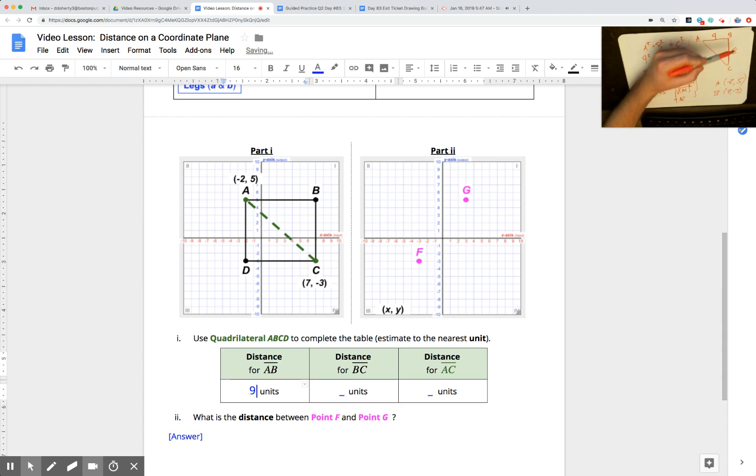We knew that the distance from B to C was 8 units, so we're going to plug that in. We knew the distance from A to C, after we did a bunch of work with the Pythagorean theorem, was the square root of 145. That's really close to the square root of 144, so I know it's 12.0, 12.1.